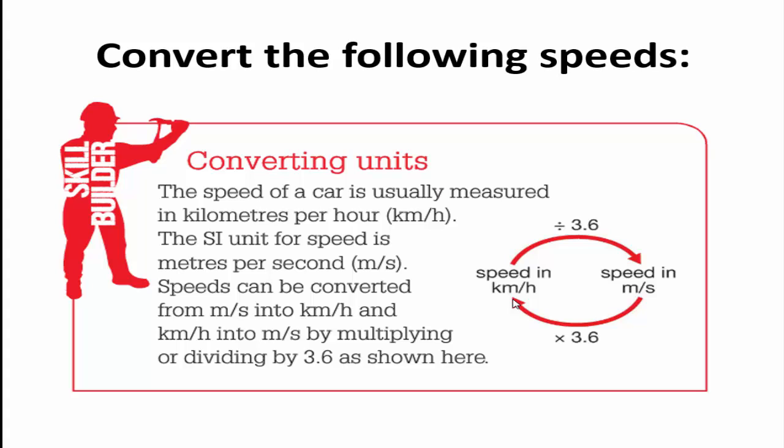To sum it up then, the simplest way to remember your conversions is that if you're in kilometres per hour and you want metres per second, we get there by dividing the number by 3.6. If you are in metres per second and you want kilometres per hour, we get that conversion by multiplying the number by 3.6.